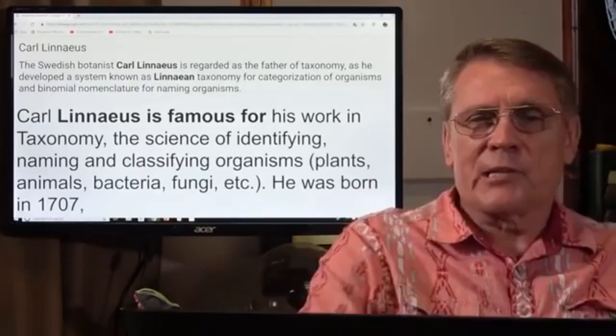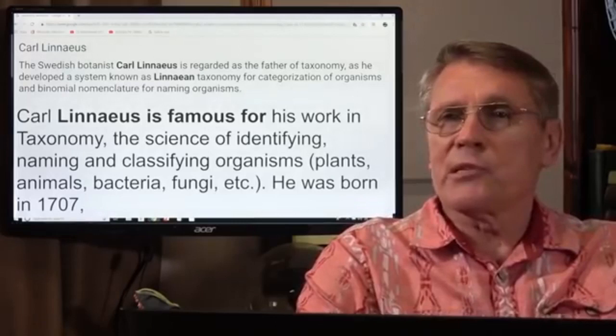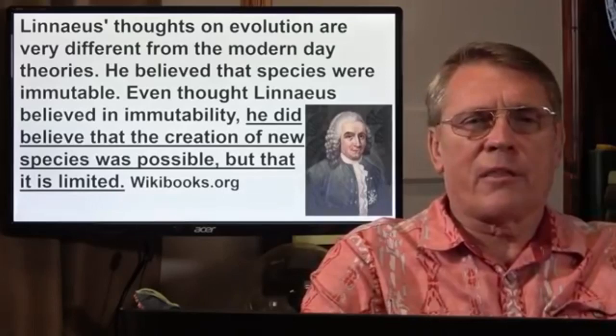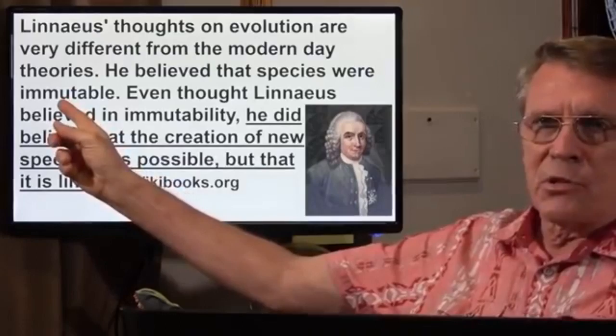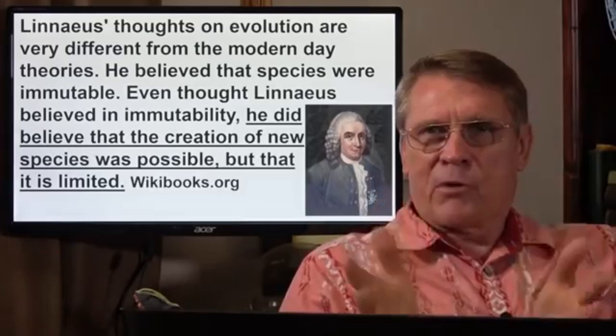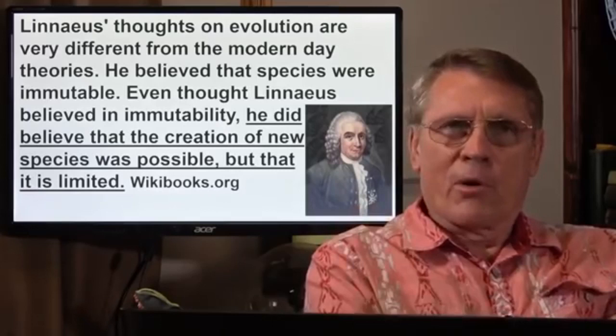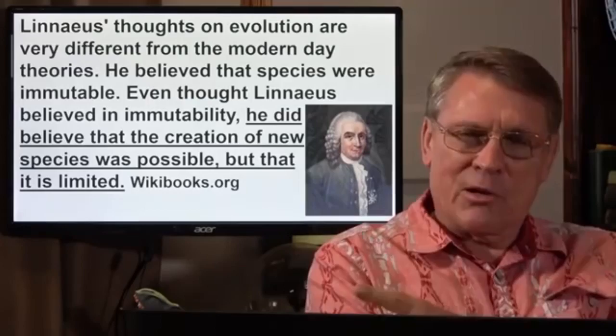Carolus Linnaeus is famous for his work in taxonomy, the science of identifying, naming, and classifying organisms, plants, bacteria, etc. He was born in 1707. Linnaeus' thoughts on evolution are very different from the modern-day theories. He believed that species were immutable, means species can't change. Now, he was wrong about this. He would say if there are 30 different kinds of sparrows, then God made 30 different kinds of sparrows. He went overboard in that regard. God might have made two sparrows, and Noah might have had two sparrows on the ark, and they have now diversified to 30 varieties of sparrows.